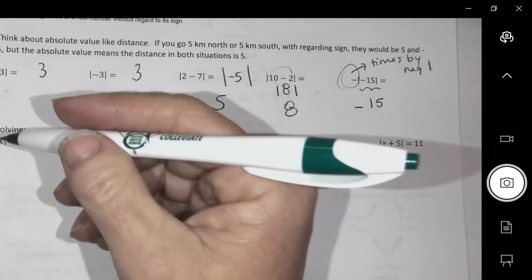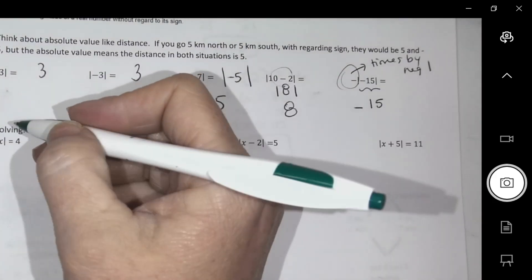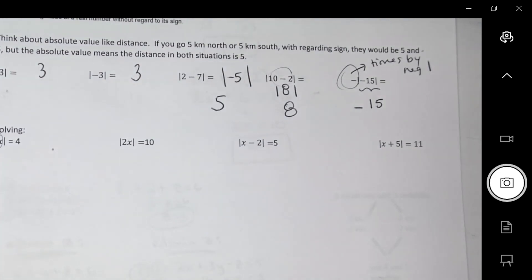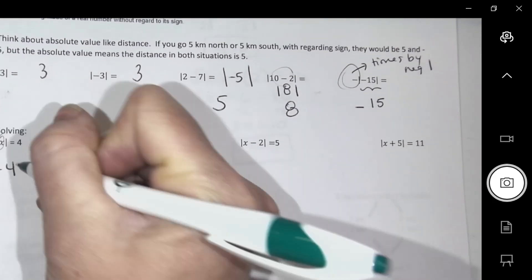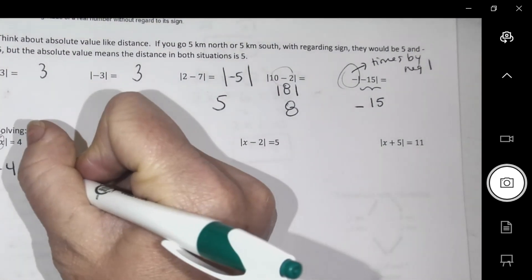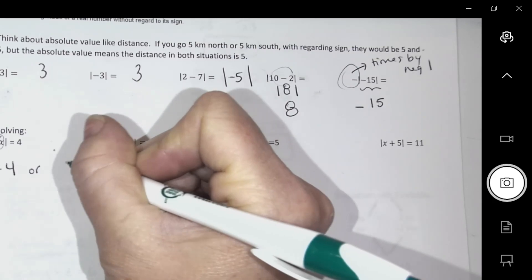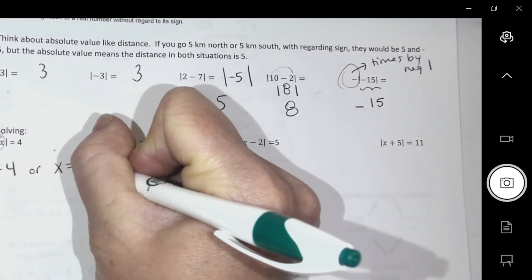I want you to think about this. What could I have had in this bracket to produce a 4? The absolute value of what could have worked? The absolute value of 4, or what else could I have had? Negative 4.